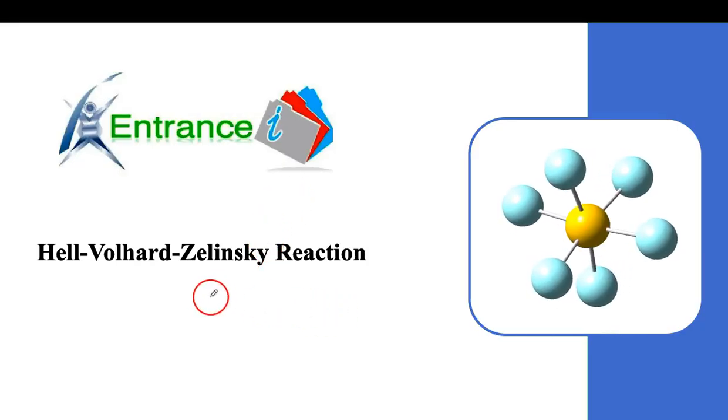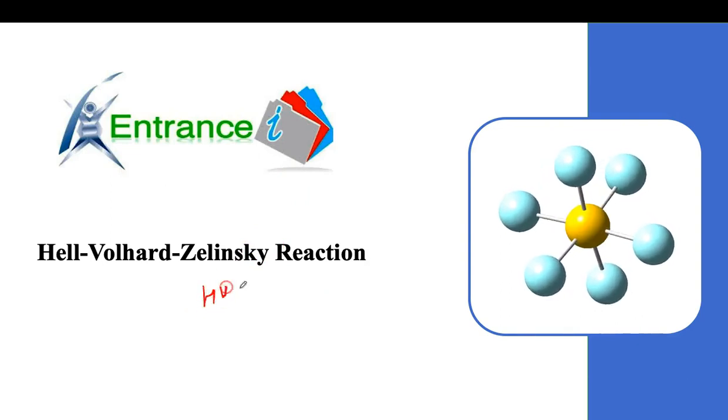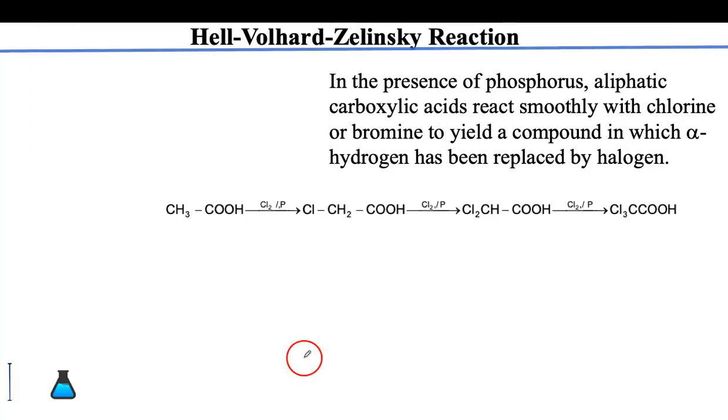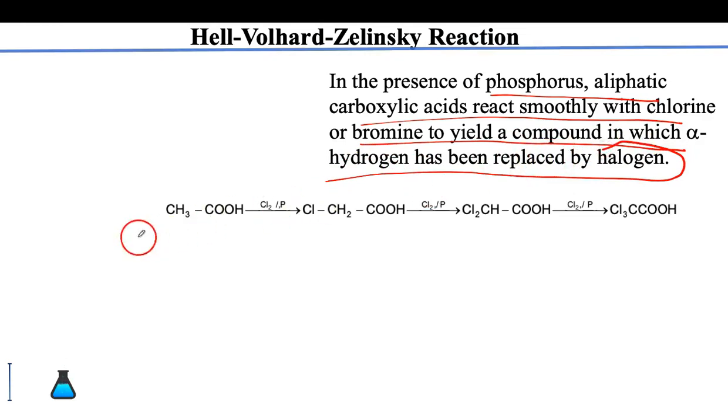Let's start with the HVZ reaction, which is a very important reaction of carboxylic acids. In the presence of phosphorus, aliphatic carboxylic acids react smoothly with chlorine or bromine to yield a compound in which alpha-hydrogen has been replaced by halogen.